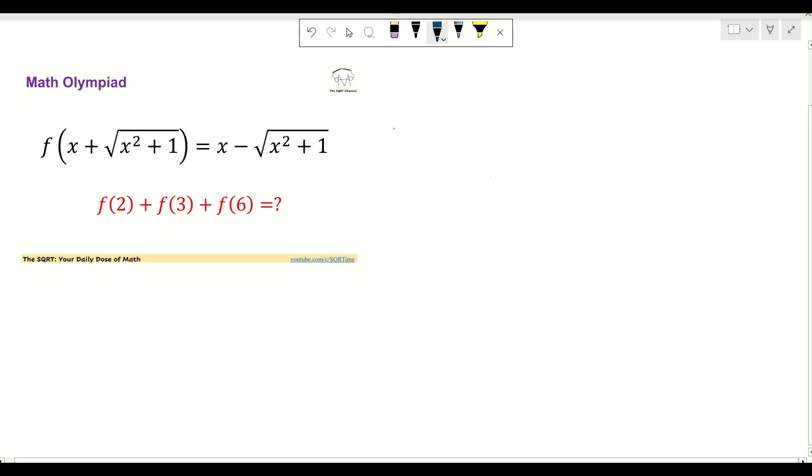Hello everyone, welcome to the Security channel. In this video we are going to talk about the problem that you see here. We are given f(x + √(x² + 1)) = x - √(x² + 1). We are going to find f(2) + f(3) + f(6). Let's see.